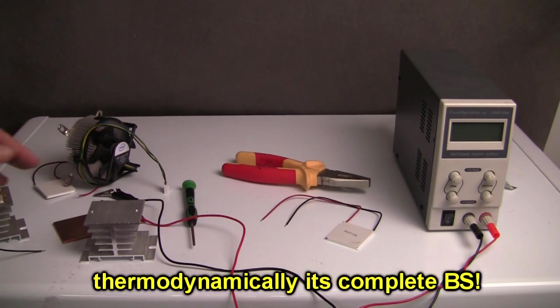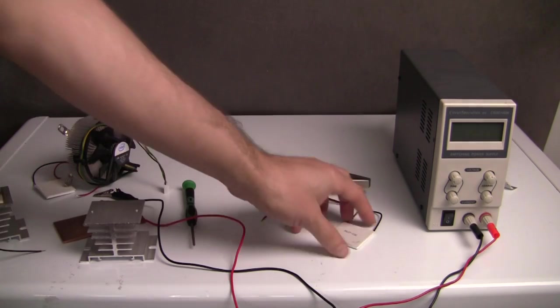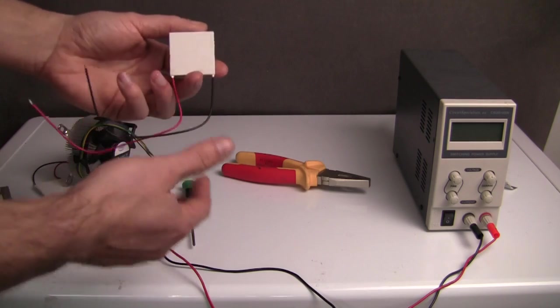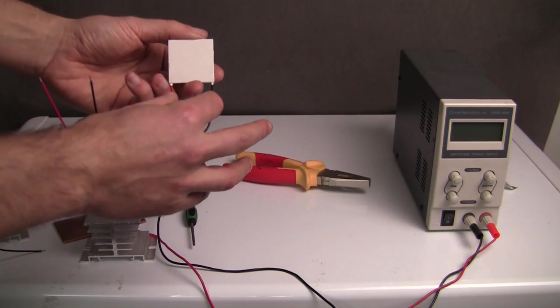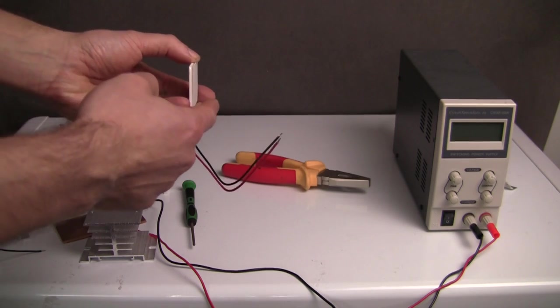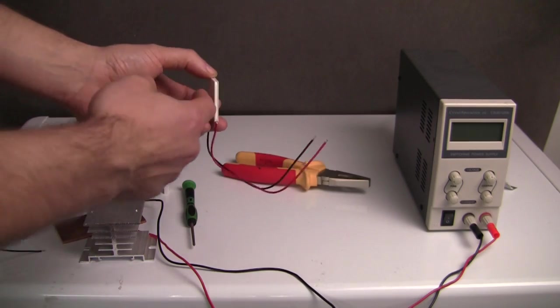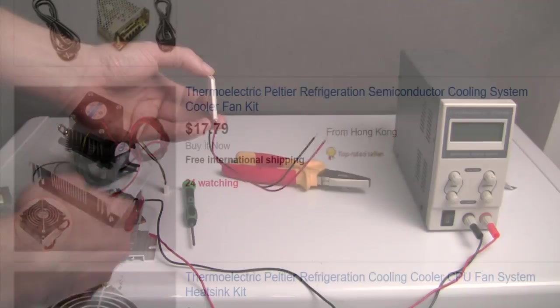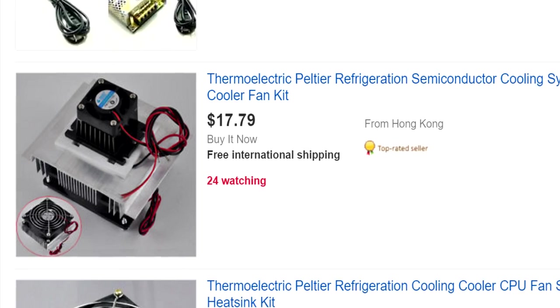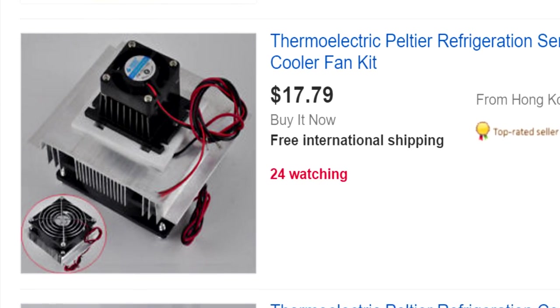I can completely destroy it thermodynamically but I thought it might be fun just to actually make one. So what a Peltier effect device does is you pass, you put a voltage across it, pass current through it. One side gets hot, one side gets cold. Takes energy to do it of course and then you use that cold to either just run an electric fridge or something or to condense water in this case.